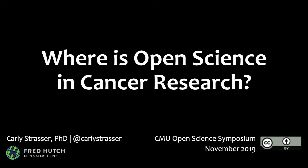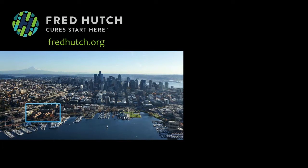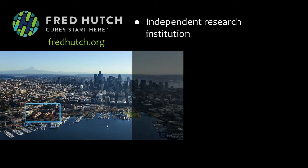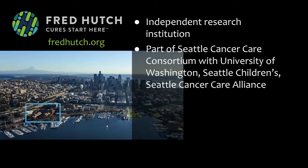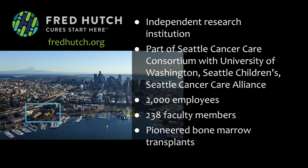Thanks, everybody, for being here. I heard a lot of good things about this symposium last year, so it's really nice to be here this year. If you haven't heard of Fred Hutch, the Fred Hutch Cancer Research Center is located in Seattle — on South Lake Union, a really good spot with lots of nice views. We're an independent research institution, part of a larger cancer care consortium in the Seattle area. We have about 2,000 people that work there, 238 faculty members, and we're most famous for pioneering bone marrow transplants. We're near University of Washington and have affiliations with them, but we are separate, and we don't actually have a clinic.